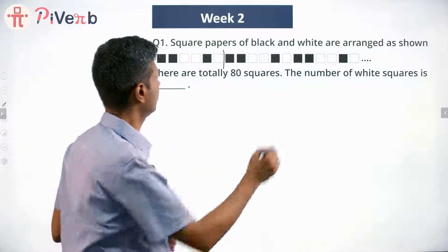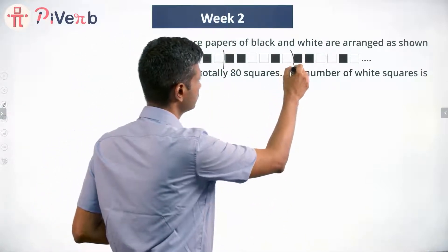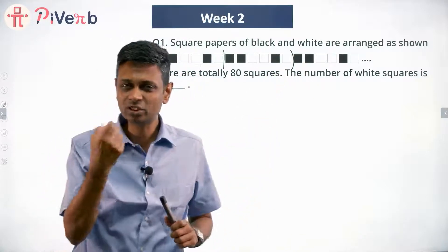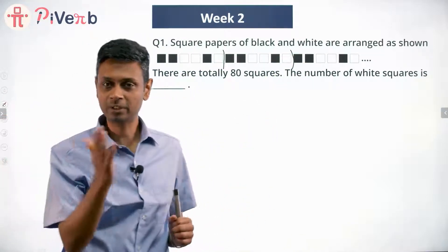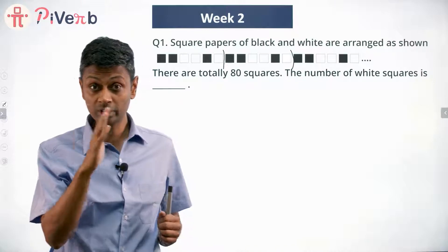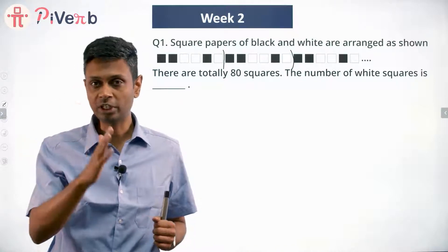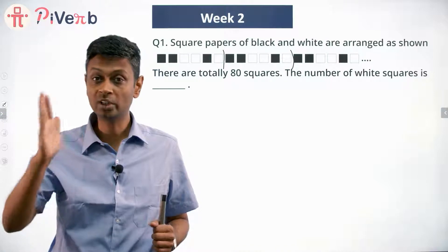So the pattern gets cut off here. My pattern gets cut off here. Every six squares, the pattern gets completed. What happens from 1 to 6 happens from 7 to 12, happens from 13 to 18, happens from 19 to 24.